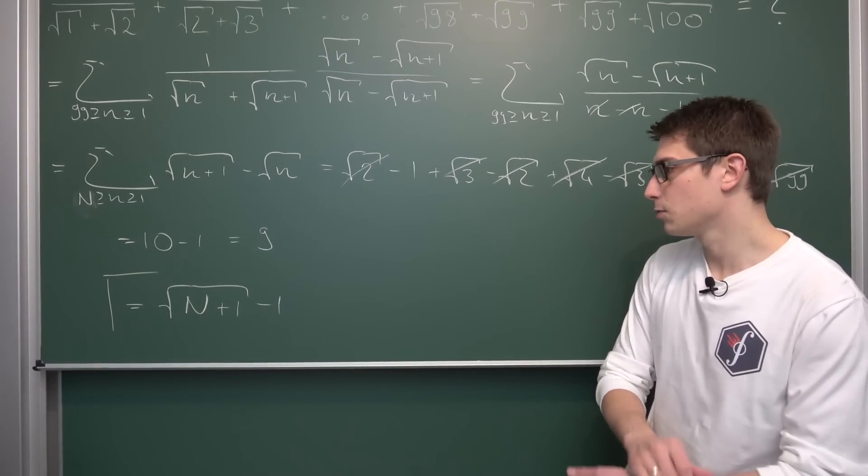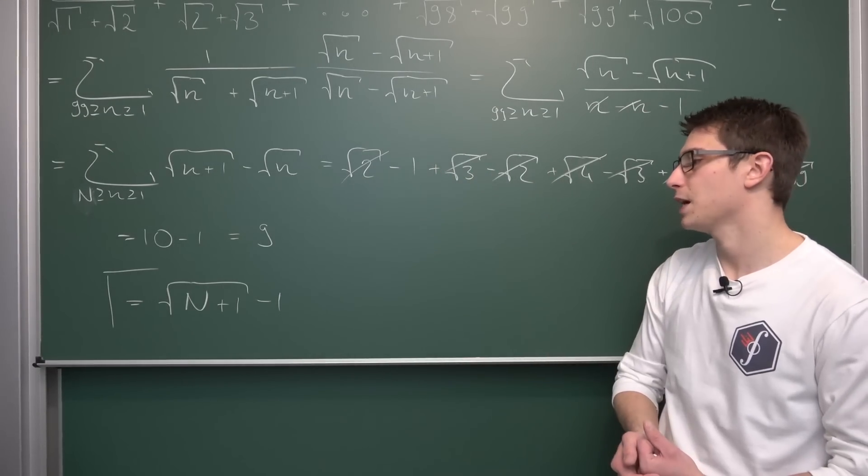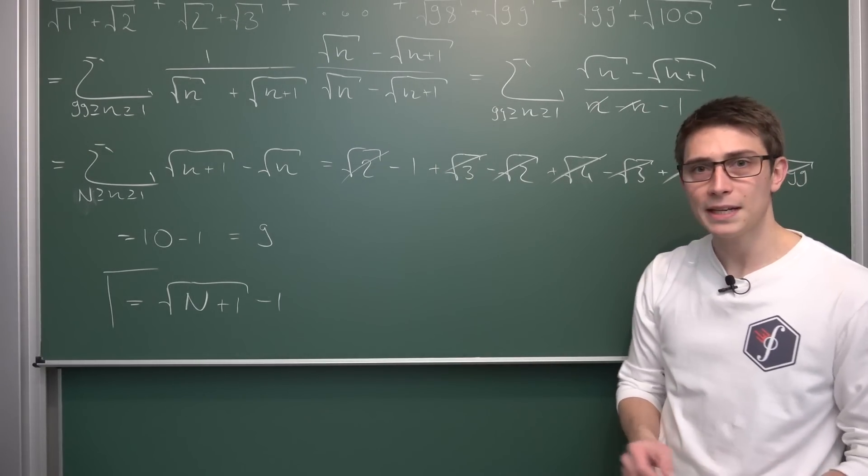And like mentioned before in the limit it would diverge for n to infinity. Obviously our square root is strictly increasing. So yeah, would diverge in the limit. But yeah, this is it for now.